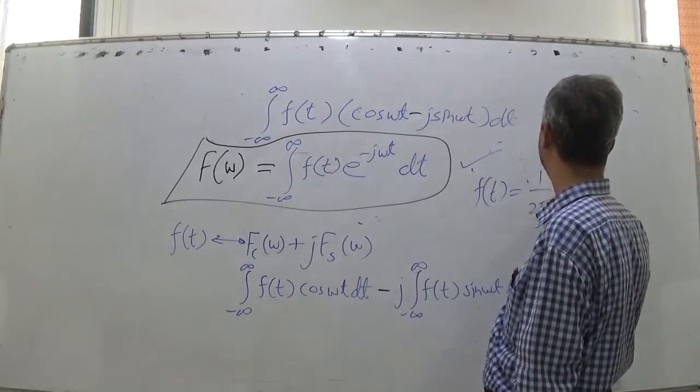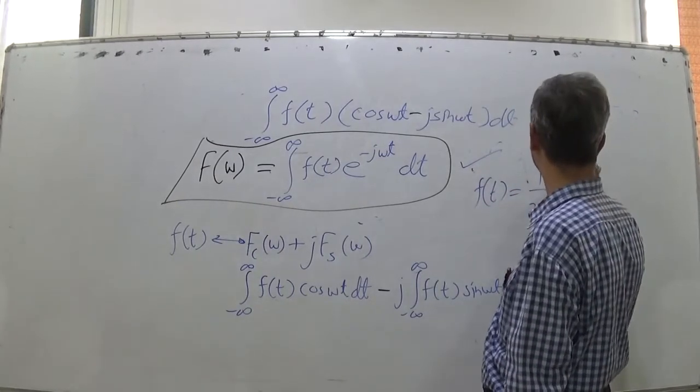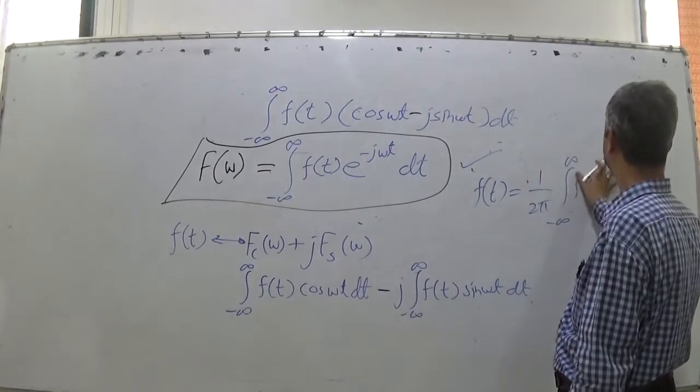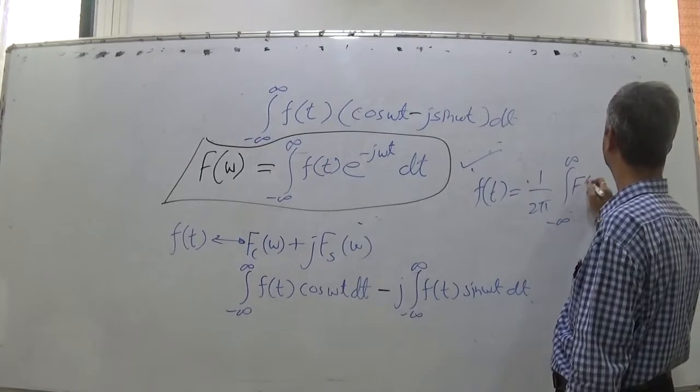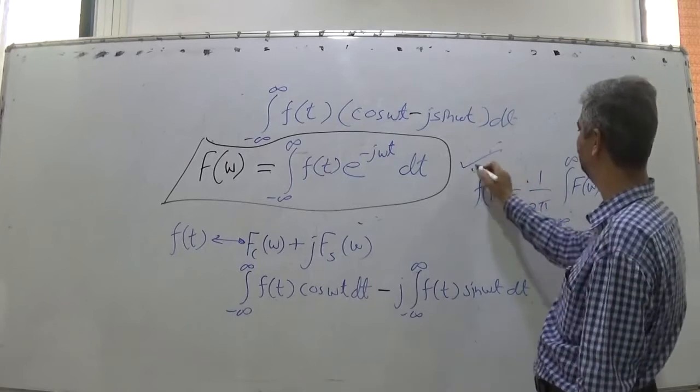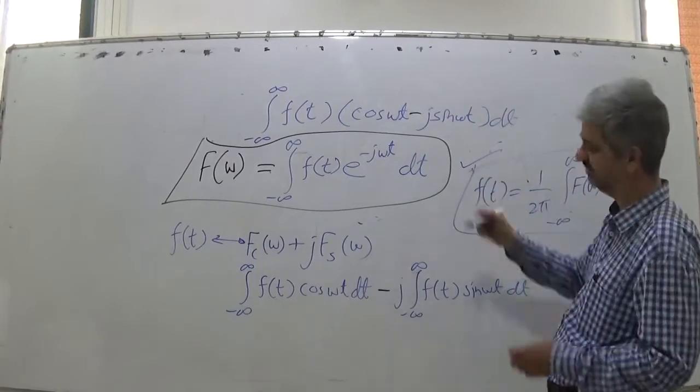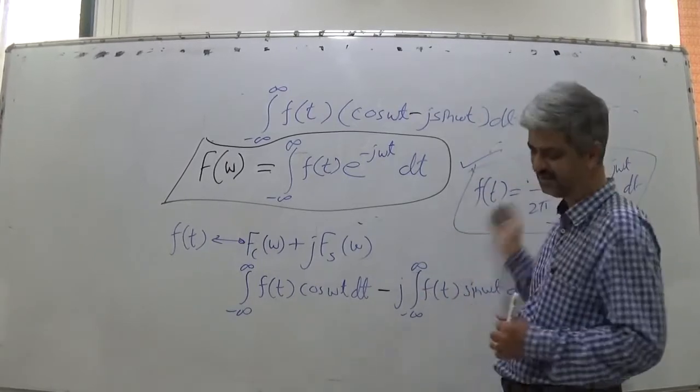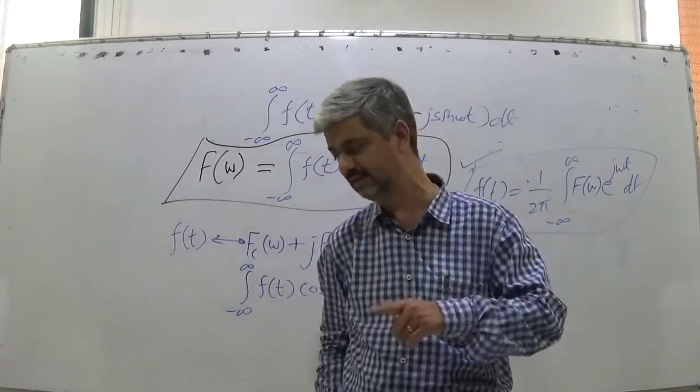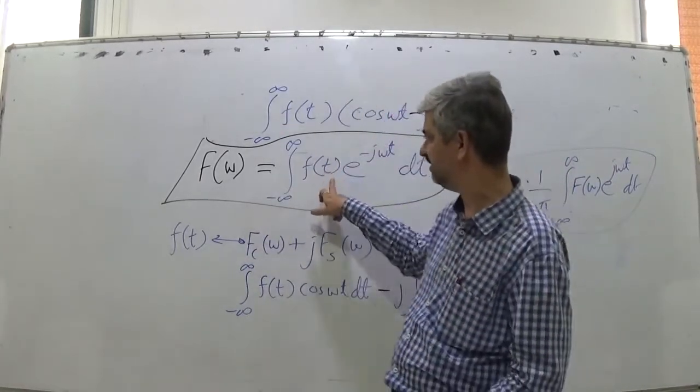f(t) = 1/(2π) ∫[-∞ to ∞] F(ω)e^(jωt)dω. This is inverse. How these two are matching with each other, we will elaborate later.